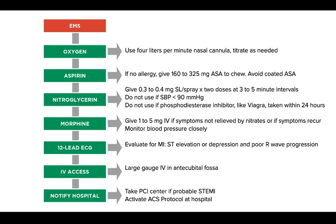Do not use nitroglycerin if a phosphodiesterase inhibitor like Viagra was taken within the last 24 hours. For morphine, give 1 to 5 milligrams IV if symptoms were not relieved by nitrates or if symptoms recur, and monitor blood pressure closely.